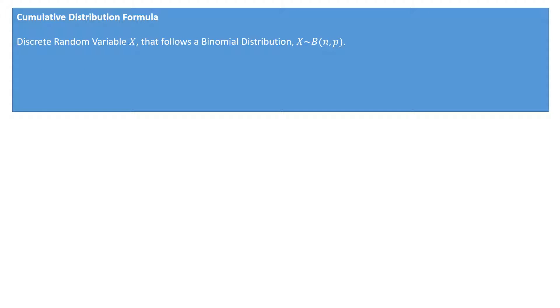In this video we'll learn about the cumulative distribution formula for discrete random variables X which follow a binomial distribution. We'll be using the cumulative distribution formula whenever we're looking for the probability of X being less than or equal to some value. For instance, if I'm flipping a coin five times, I may be interested in finding the probability of obtaining three tails or less.